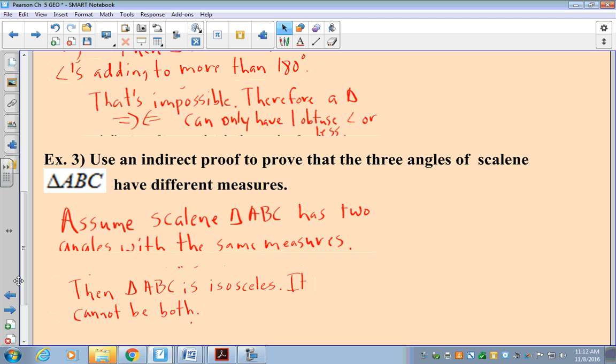Step number two, use that to logically come to a contradiction. If two sides are the same, then you have an isosceles triangle. You cannot be an isosceles triangle and a scalene triangle. That is your contradiction.